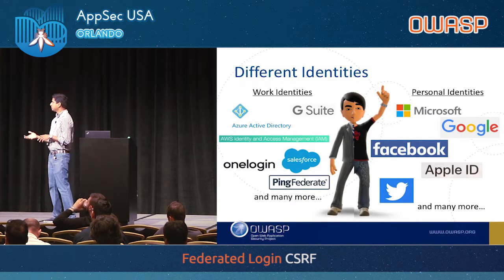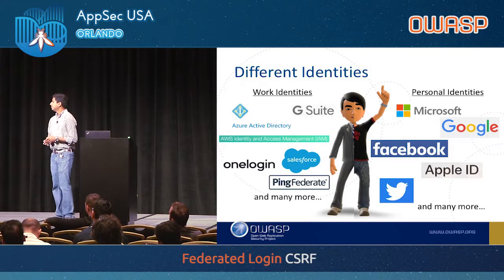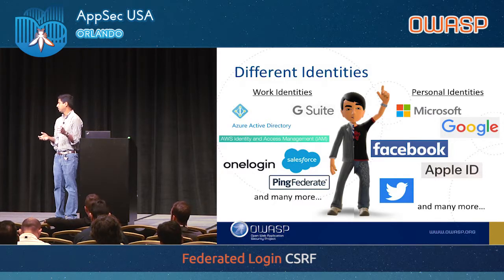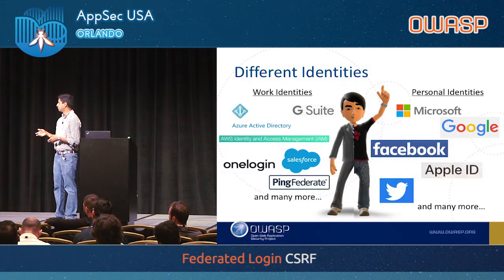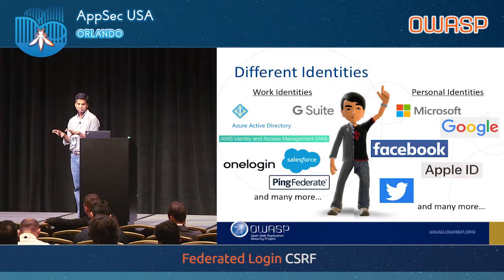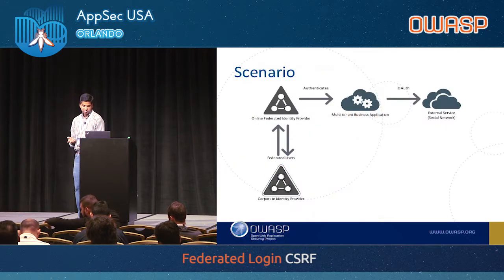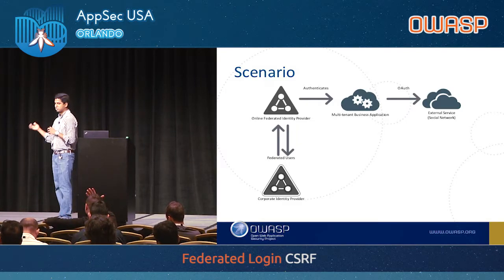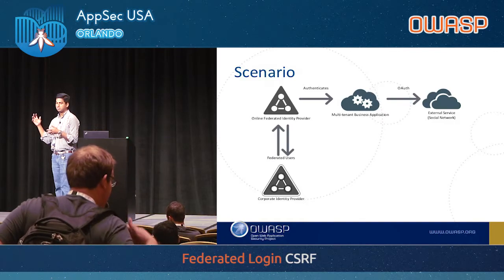Now coming to the scenario where this may be a problem. Most of the time, a user is not a single identity in all online contexts. You might have work identities based on Azure, AWS, Salesforce, or whatever you use for work, and you have personal identities like Facebook, Twitter, or Microsoft identities. These were separate initially when designed, but more and more we are seeing a scenario where your corporate identity is connected to your social identity for social analytics or posting activities to Twitter.